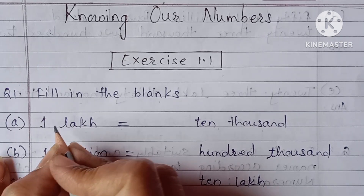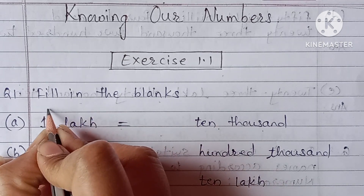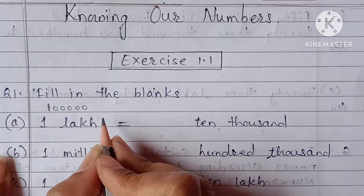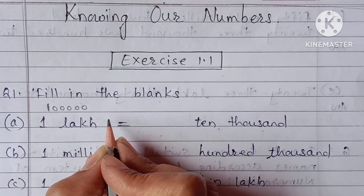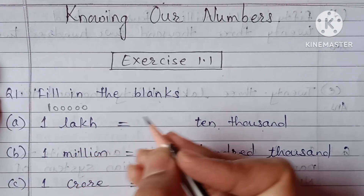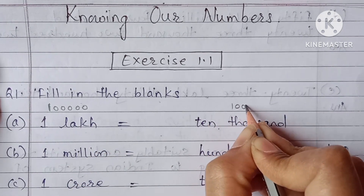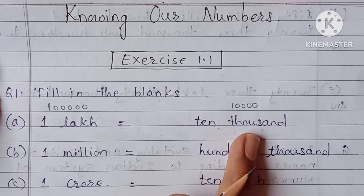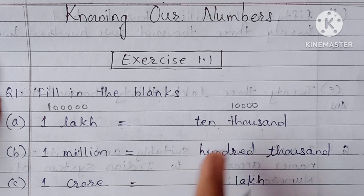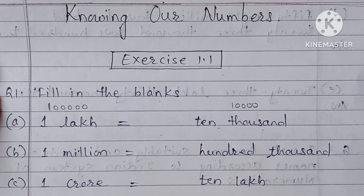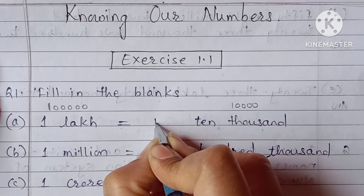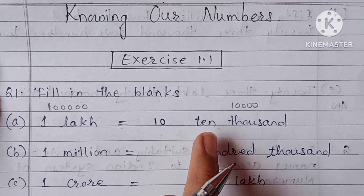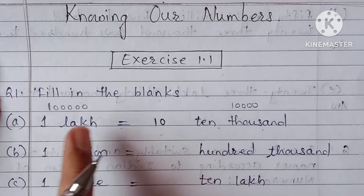First tell me: on 1,00,000 how many zeros are there? 5 zeros - 1,2,3,4,5. And 10,000 mein kitne zeros rehte hain? 4 zeros - 1,2,3,4. Yahan par 5 zeros, yahan par 4 zeros, to kitne zeros aur kam hain? Only 1. So 1 zero means you write 10. So 1,00,000 is equal to 10 times 10,000.